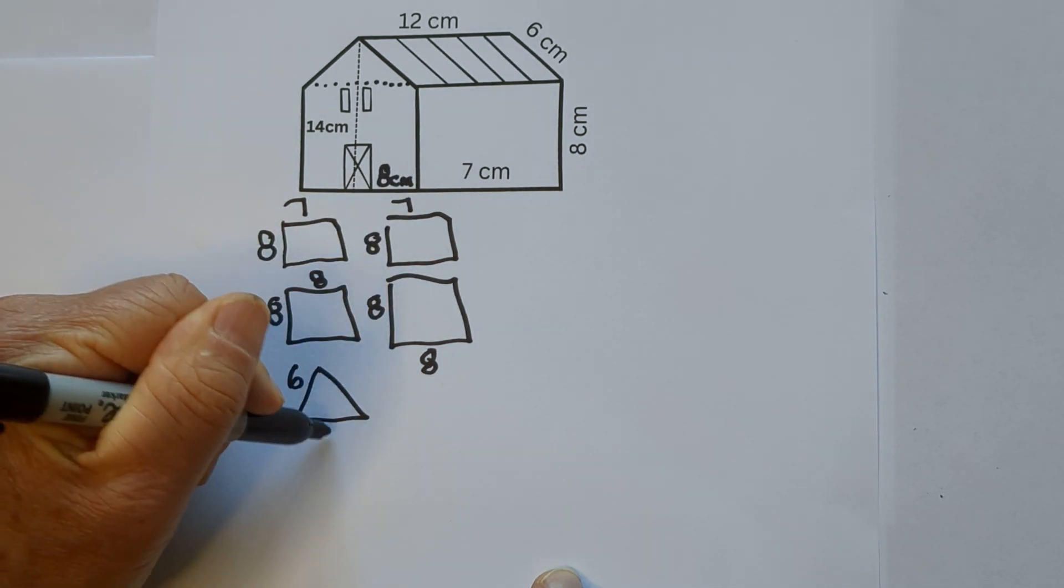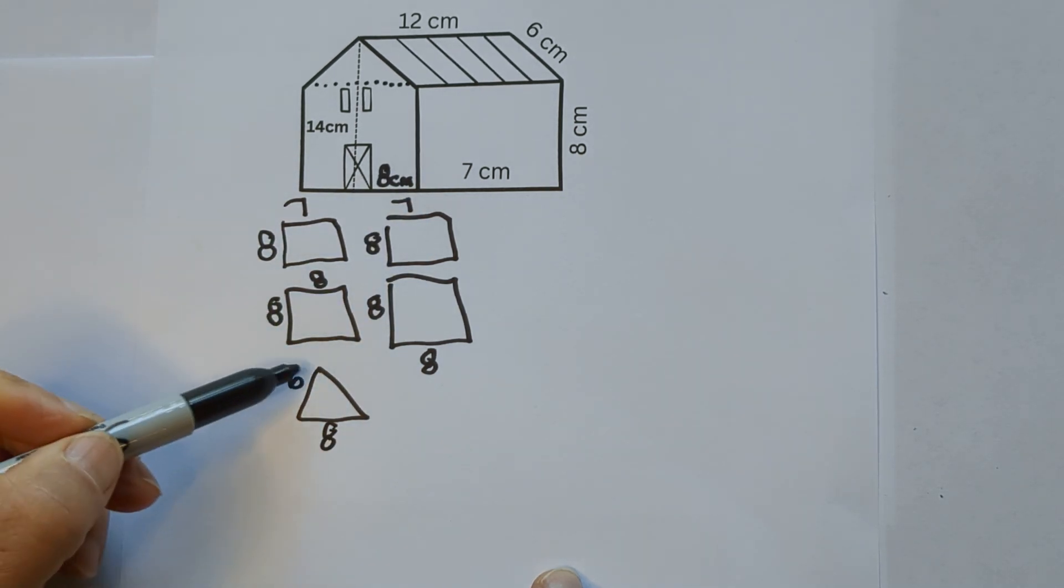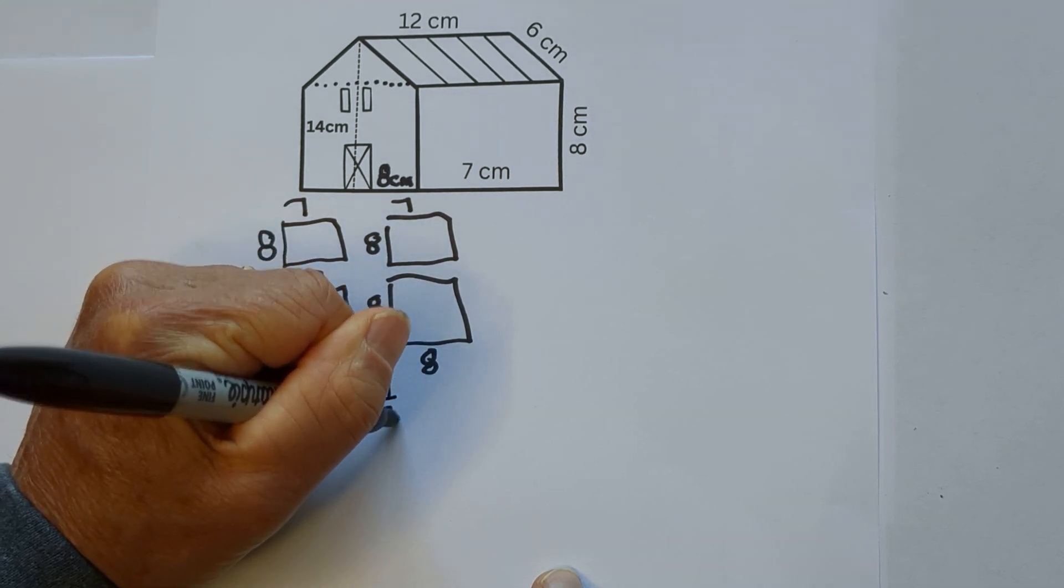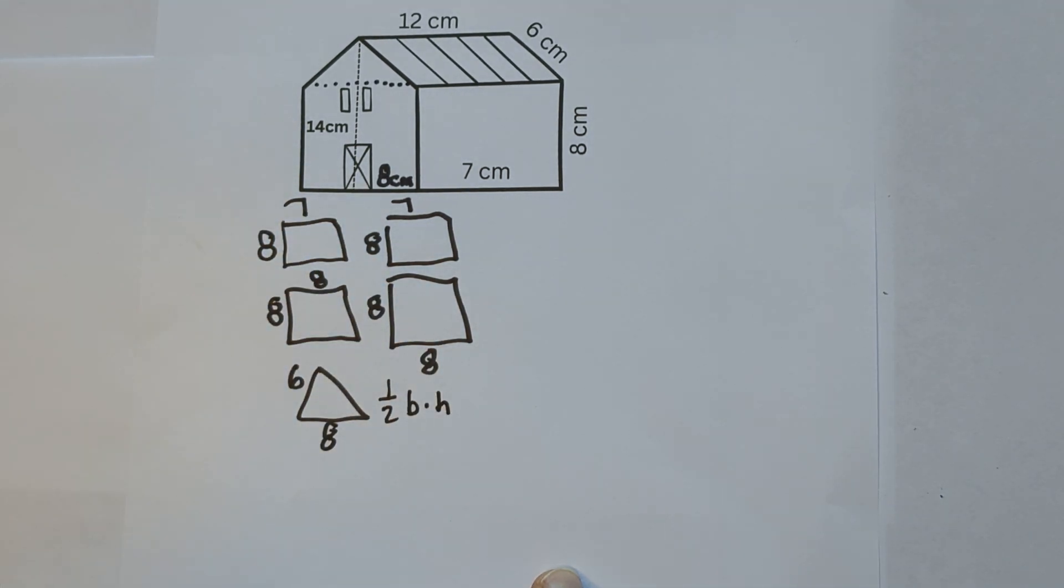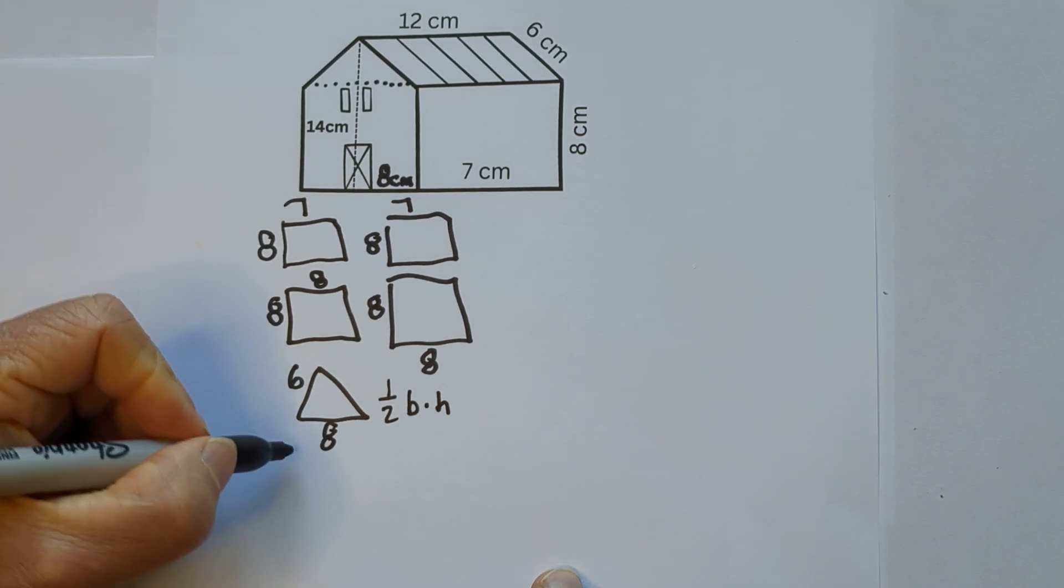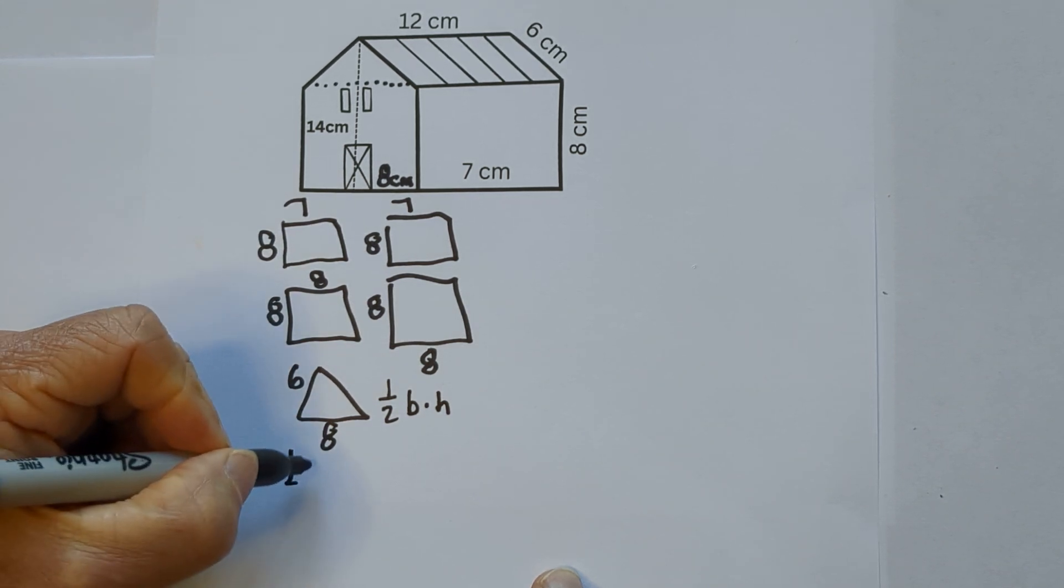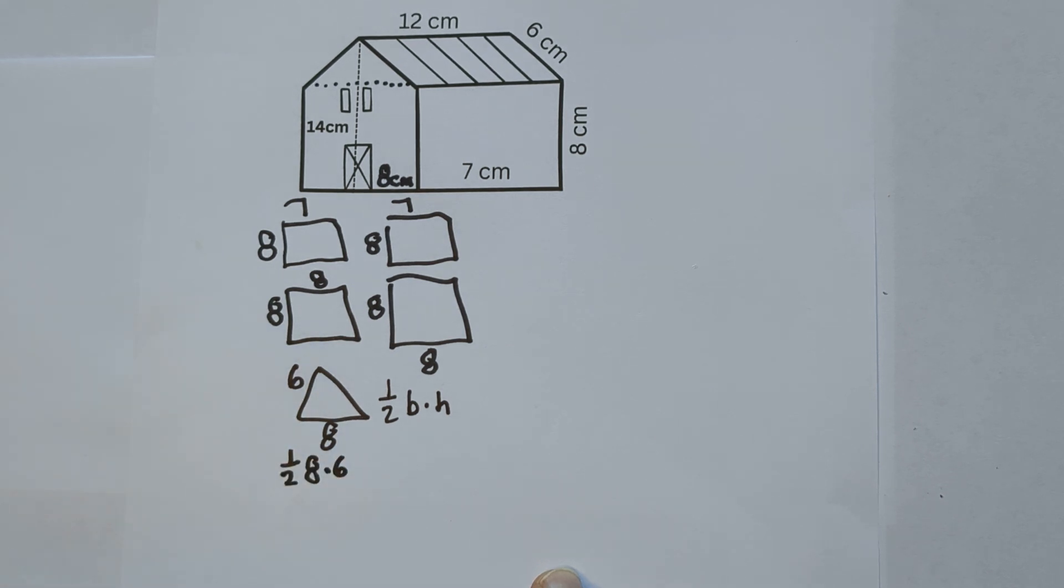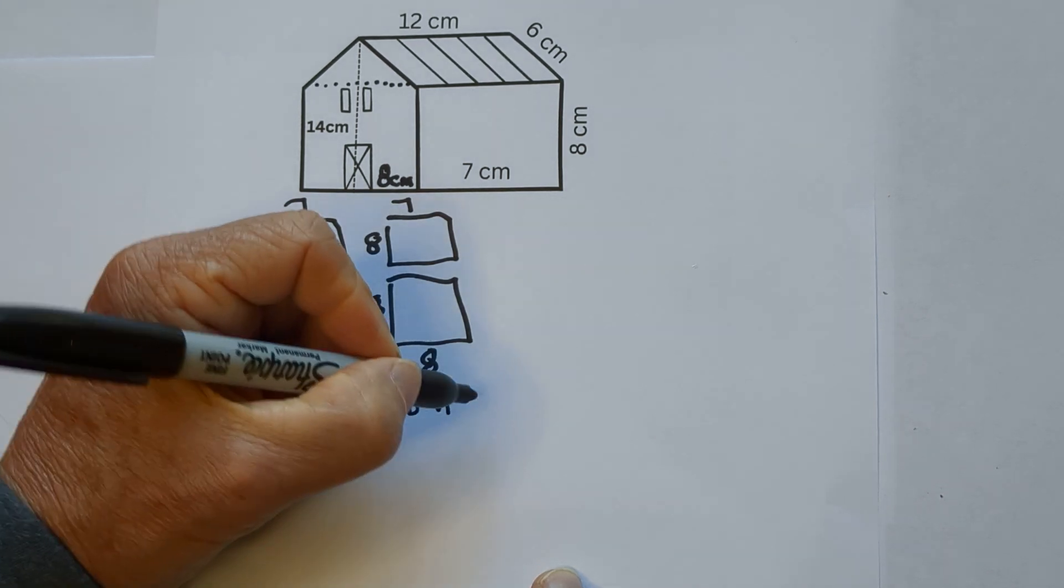So we have a triangle that has a height of 6, and we know the formula is ½ base times height, so that is going to be ½ times the base times the height. Okay, and then we have two of these.